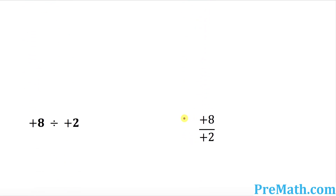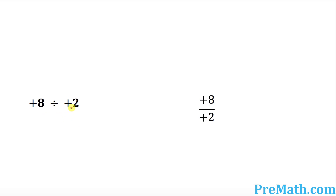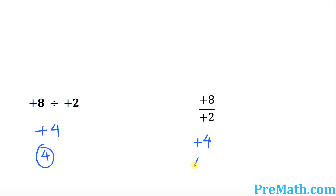And finally, when we have positive 8 divided by positive 2, positive divided by positive is always positive. 2 goes into 8 four times, so we got positive 4, or simply 4. And in fraction notation, positive divided by positive is positive — 2 goes into 8 four times, so our answer is positive 4. That's pretty much it about dividing integers. Thanks for watching.